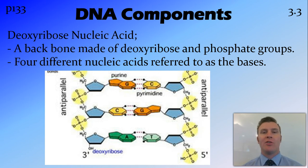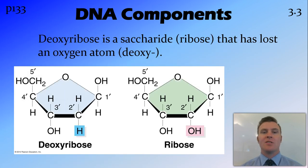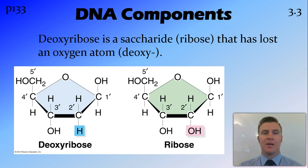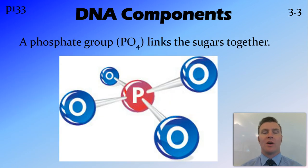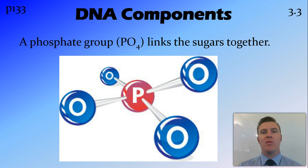There are four different nucleic acids found within the DNA, which are referred to as bases. Deoxyribose is a saccharide — it's based off ribose, a sugar — and it has lost an oxygen atom, therefore making it deoxy. We also have a phosphate group that links these deoxyribose molecules together to form the backbone.